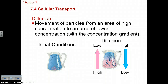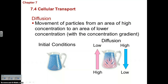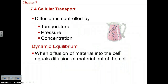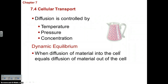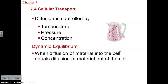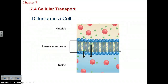Simple diffusion is the movement of any particles from high to low concentration without the use of energy, along the concentration gradient. This could be perfume, water, food coloring, or any particles going from high to low. Diffusion is controlled by temperature, pressure, and concentration, and materials always diffuse from high to low until they reach dynamic equilibrium.